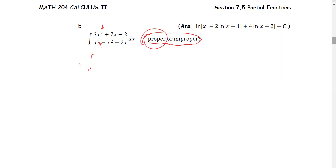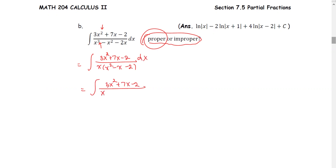Next, we factor the denominator completely as x multiplied by x squared minus x minus 2, and then factor one more time to get x times x minus 2 times x plus 1. With respect to x, all three factors are linear — linear factors each of power 1. That means we are going to have three partial fractions.